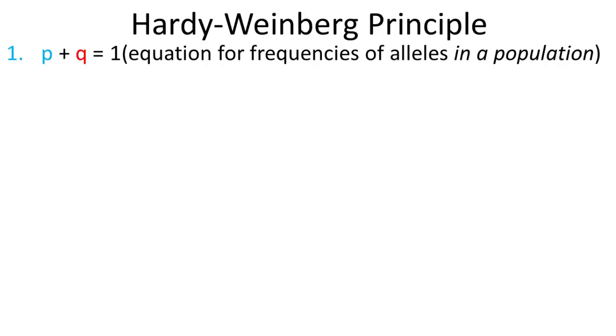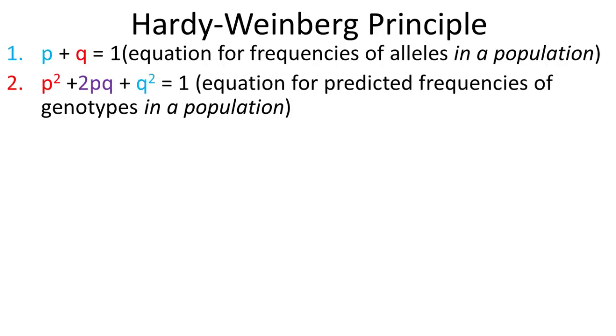The Hardy-Weinberg principle starts with two equations. The first one is p + q = 1, which is an equation for the frequencies of alleles in a population. This is easiest to demonstrate with two alleles. The second equation is p² + 2pq + q² = 1, and this is for predicting the frequencies of genotypes in a population.